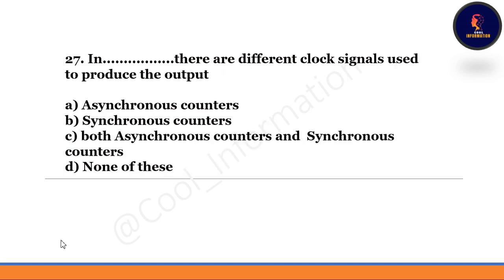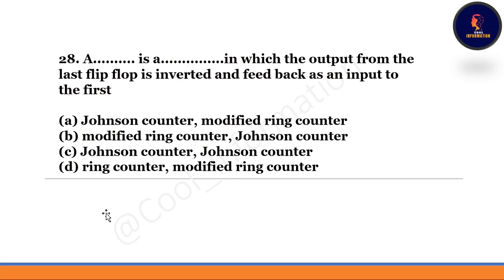Next question: In which type of counter are different clock signals used to produce the output — option A: asynchronous counter, option B: synchronous counter, option C: both, option D: none of these? The correct option is option A — in an asynchronous counter, different clock signals are used to produce the output.